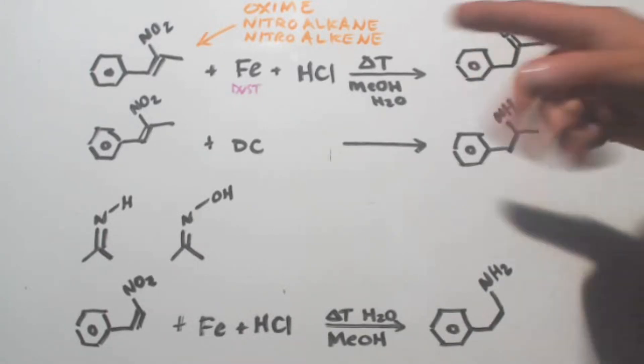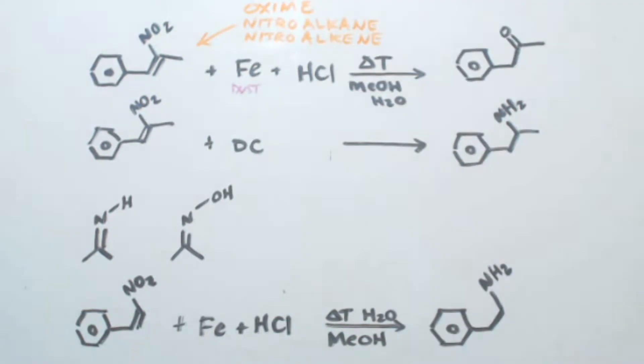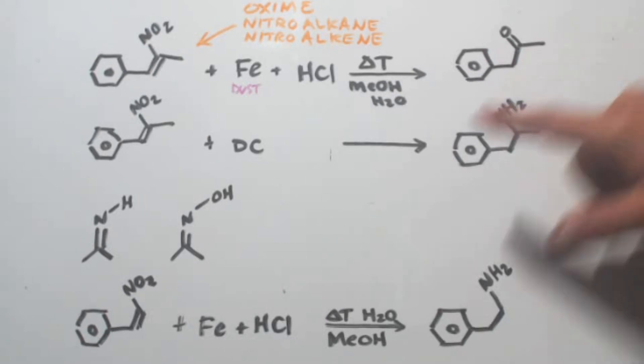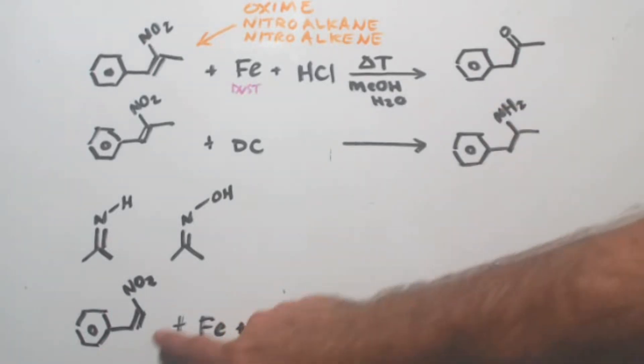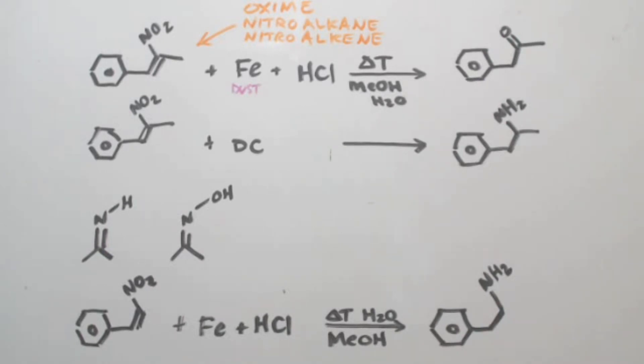Now the reason why this works is because there's a methyl group here. Now if this methyl group was not there, it wouldn't come out to be a ketone. Because you can see down here, right? There is no methyl group. There's just a hydrogen here.